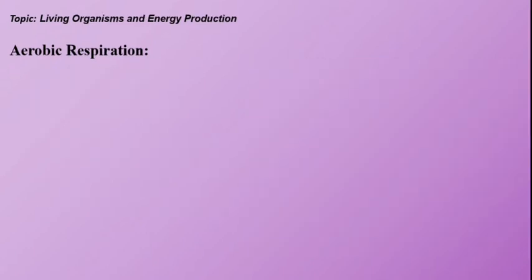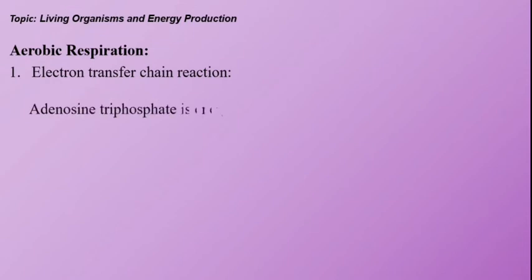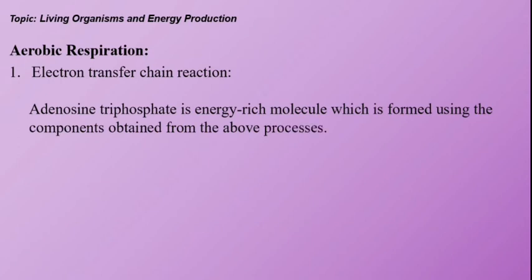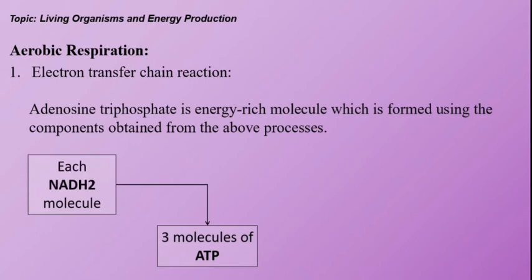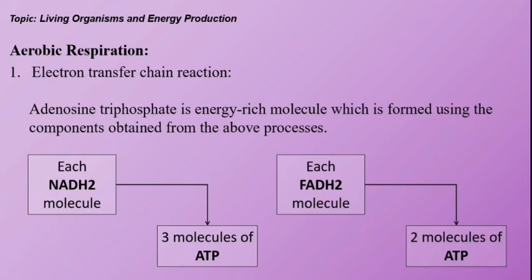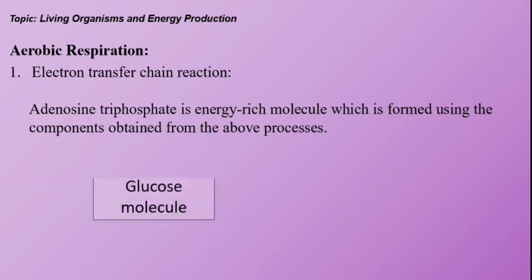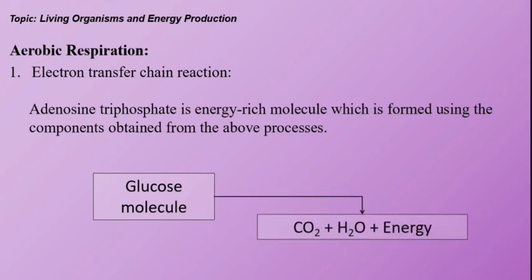Electron transfer chain reaction: Adenosine triphosphate is energy rich molecule. ATP is formed using the components obtained from the above process. Three molecules of ATP are obtained from each NADH2 molecule and two molecules of ATP from each FADH2 molecule. Thus, a molecule of glucose is completely oxidized in aerobic respiration and molecules of CO2 and H2O are produced along with energy. This is why we exhale CO2.